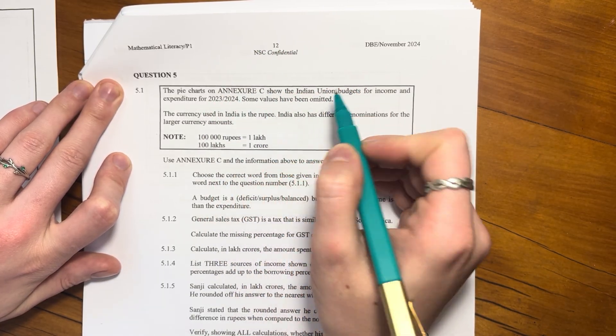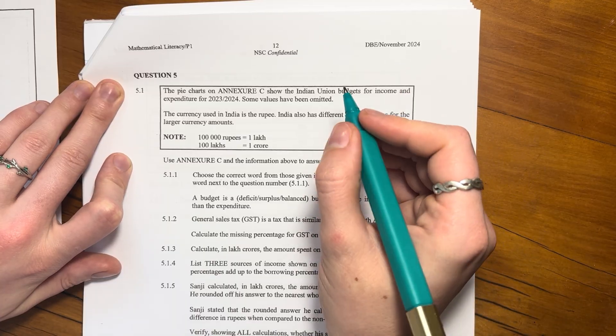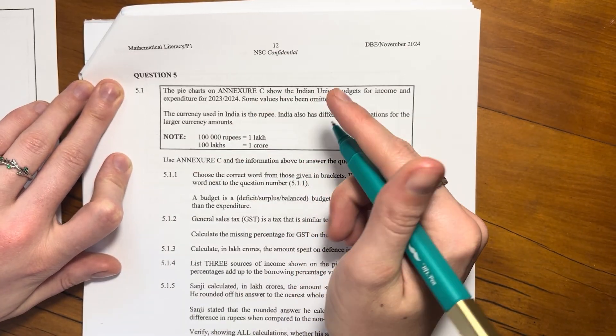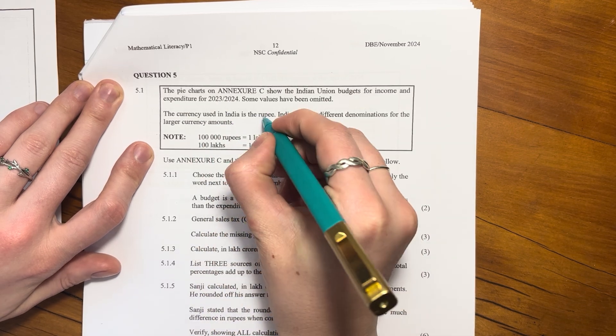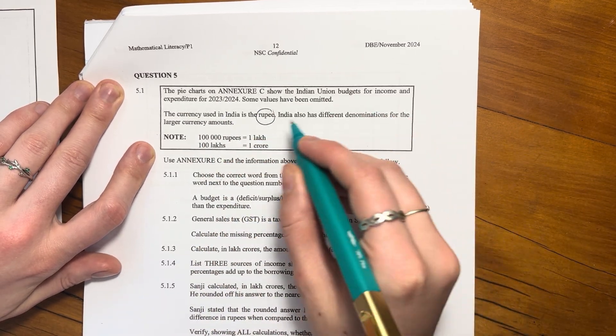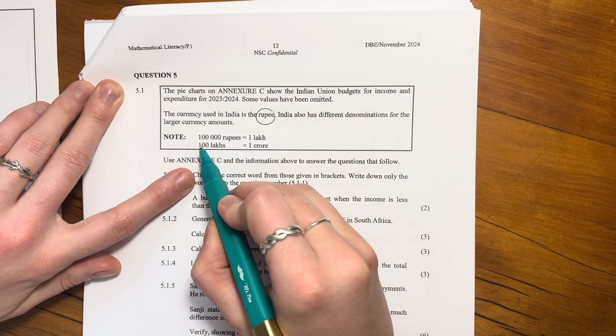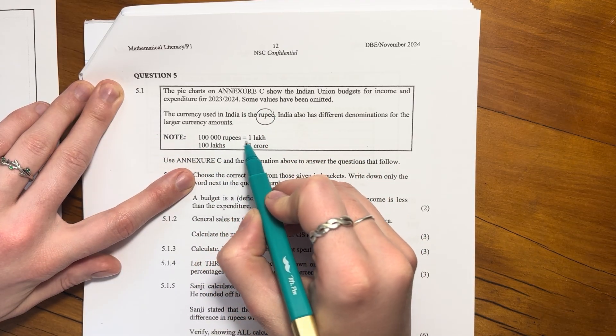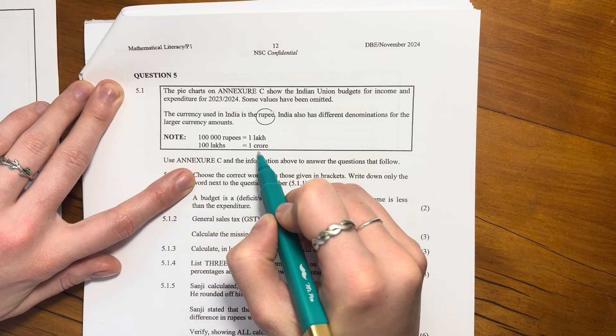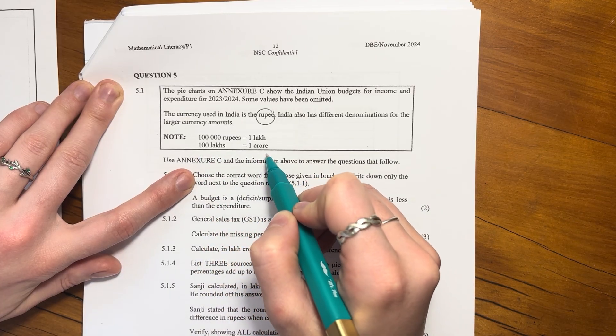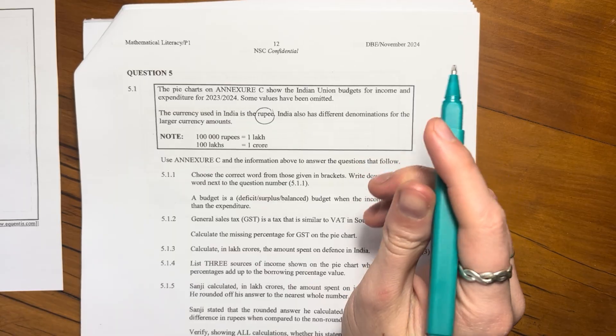Some values have been omitted. Whenever we see omitted stuff, we know that we're going to have to calculate it ourselves. But let's keep going. The currency used in India is rupee. India also has different denominations for larger currency amounts. So 100,000 rupees gives me 1 lakh. And then 100 lakh gives me 1 crore.